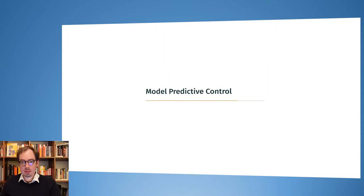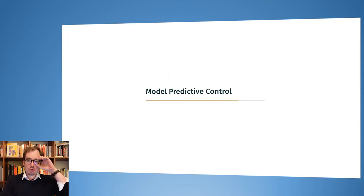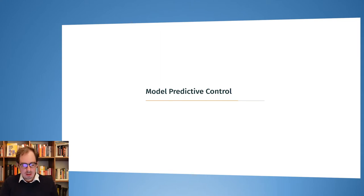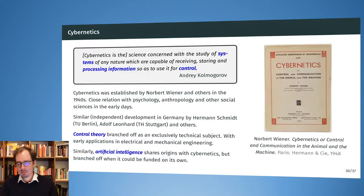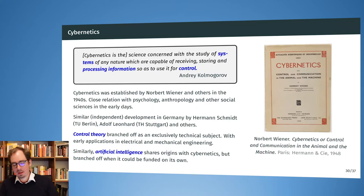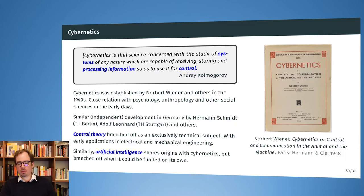This is interesting if, for example, you want to go into robotics or if you want to control physical systems, because now we will learn how to take a system and make it behave in a way that wouldn't be natural. The example we are using here is the inverted pendulum that we also saw in the first lecture.